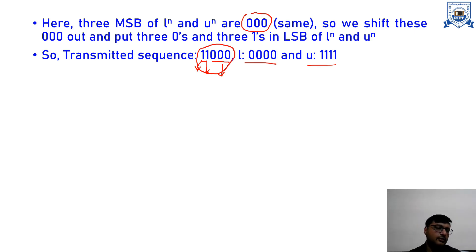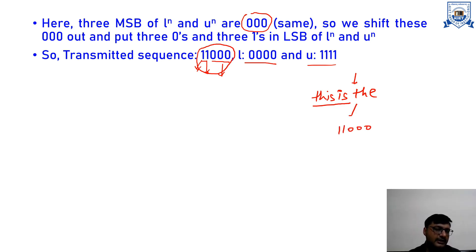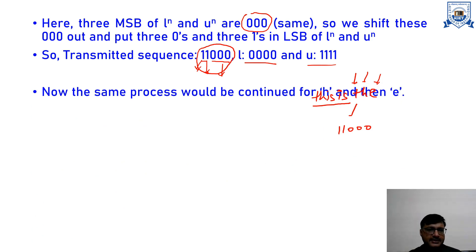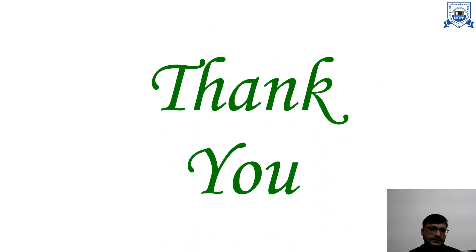The updated values of L and U are 0000 and 1111. To summarize: for the already-encoded part, T is encoded as 11000. We will continue the same process for H and E — checking second order context, then first order, then zero order, then minus one order context. If a symbol is not found at any higher order, it will always be found in the minus one order context, since that table contains all symbols occurring for the very first time. This is the PPM algorithm.